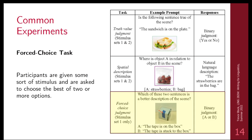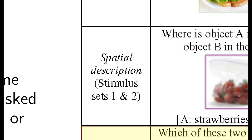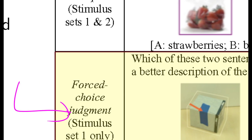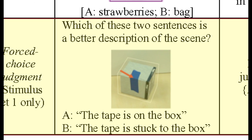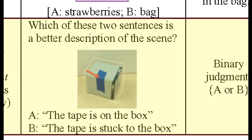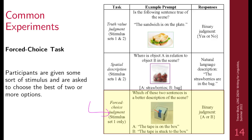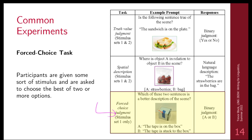The forced choice task is another major one, where participants have multiple options to select from and make a decision. For example, here's a picture of a box with a piece of tape, and there are two ways to describe it: 'The tape is on the box' or 'The tape is stuck to the box.' Which one is most natural for describing this event? You pick either A or B — sometimes there can be more options, but A and B is the easiest since you're only looking at two choices.